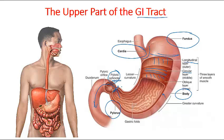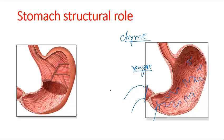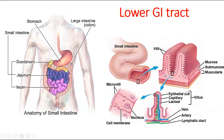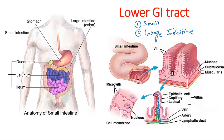There is a specific valve called the pyloric sphincter that controls entry into the duodenum. The lower GI tract, or lower part of the gastrointestinal tract, is mainly composed of two units: the small intestine and the large intestine. The majority of chemical digestion and all of the nutrient absorption takes place in the small intestine.